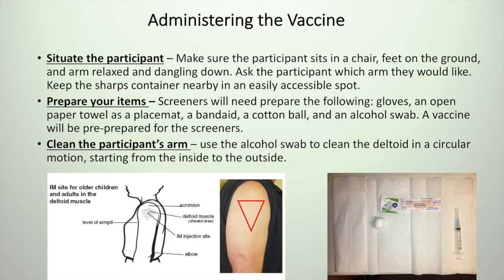Now you want to prepare your workstation. Here on the bottom of the screen we see a laid out napkin, a cotton ball, an alcohol swab, a band-aid, and a pre-filled syringe. This band-aid could actually be already unwrapped before you start administering the vaccine. After you have your workstation set up, ask the patient to roll up his or her sleeve, and if they need privacy, we do have a screen to provide that.